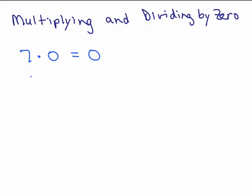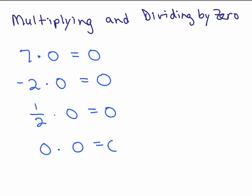So 7 times 0 is 0. If you take a negative number and multiply it by 0, it's also 0. We wouldn't say because there's one minus sign, the answer is negative. If you have a fraction times 0, it's 0. And if you multiply 0 times 0, you also get 0.